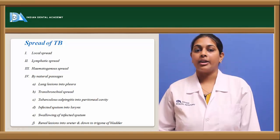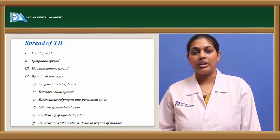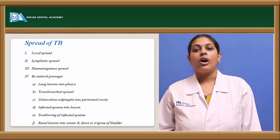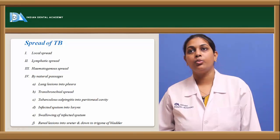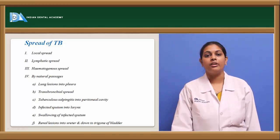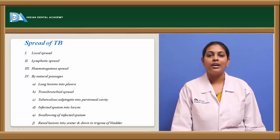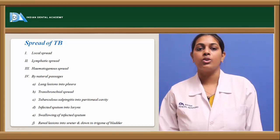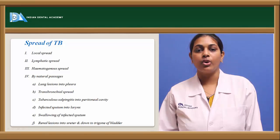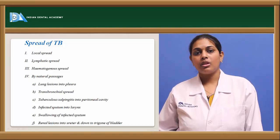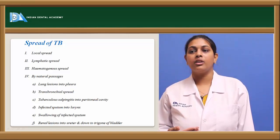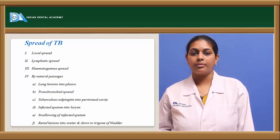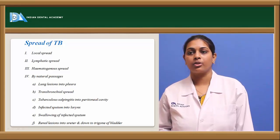Coming to the spread of tuberculosis: it could be by local spread, carried by macrophages through inhalation, ingestion, or the transplacental route. It could also be by lymphatic spread — when lymph nodes are already infected with tuberculosis, since the lung is the most common area for tuberculosis to attack first. Once lymph nodes are completely infected and the lymphatics drain into the venous system, tuberculosis may spread through lymphatic and hematogenous routes.